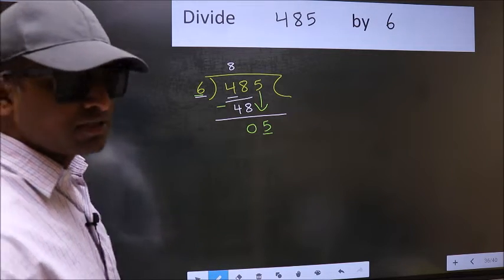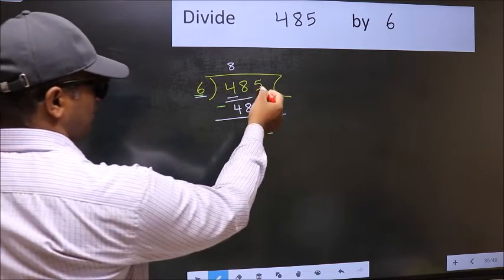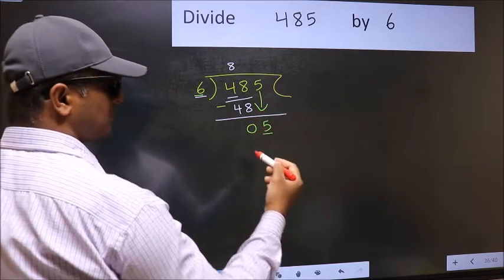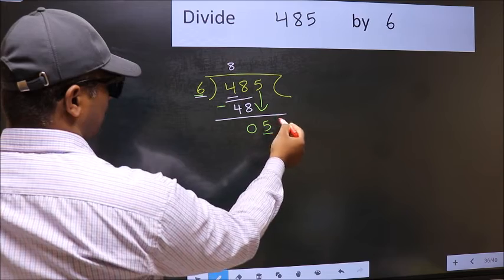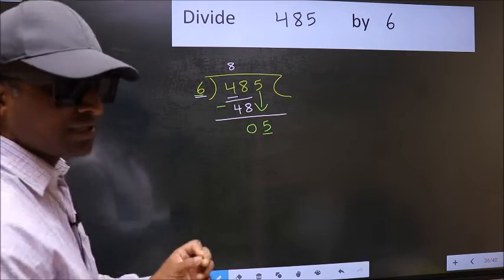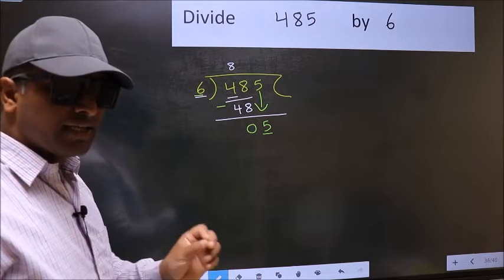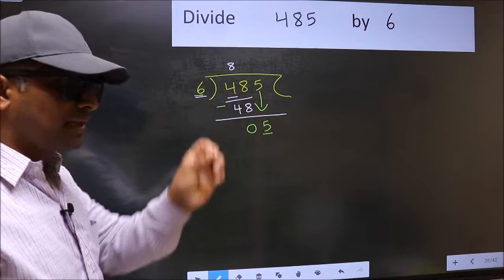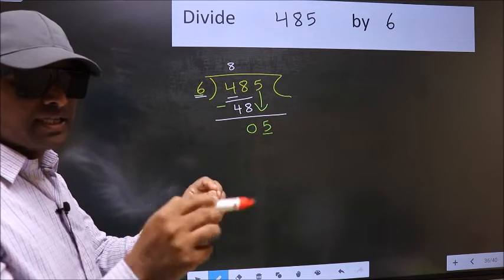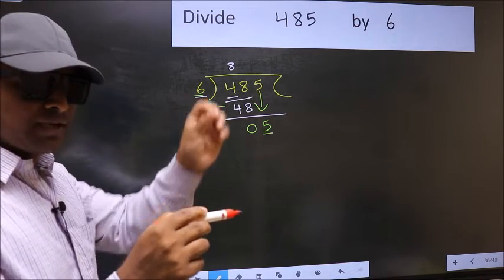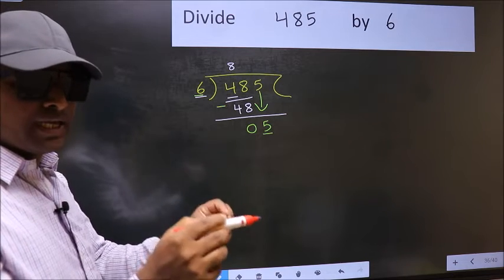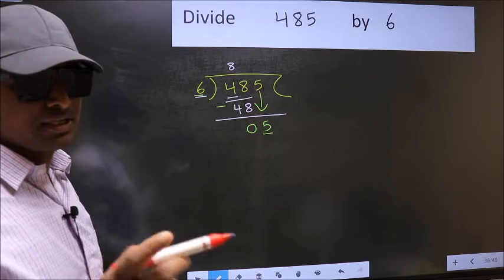Why is it wrong? Because you just brought this number down, and in the same step you want to put the decimal point and take 0. I repeat: bringing the number down and also putting the decimal point and taking 0, both in the same step - you should not do.